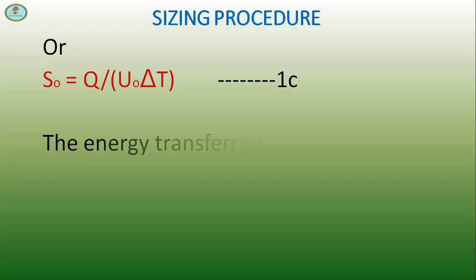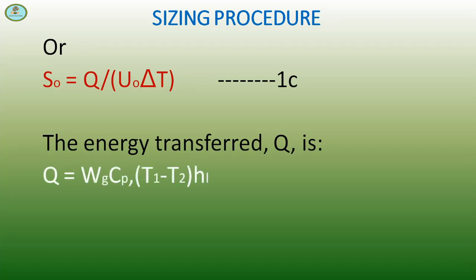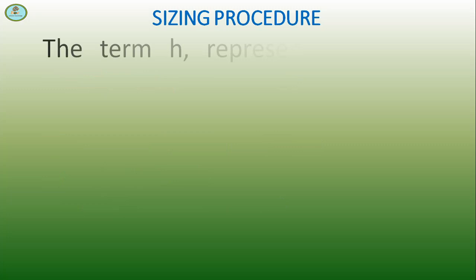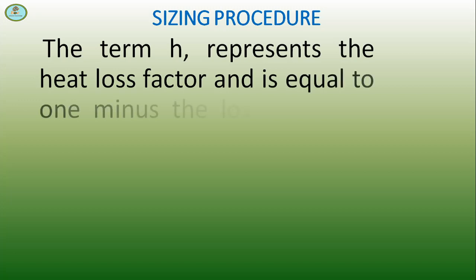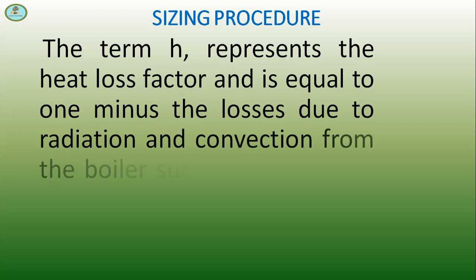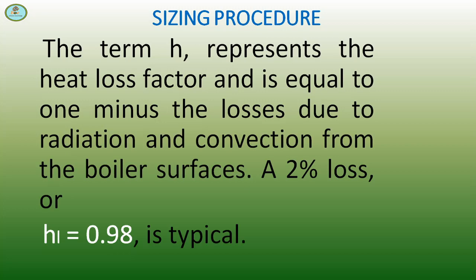The energy transferred Q is Q = Wg × Cp × (T₁ - T₂) × Hᵢ = Ws × Hs. This is equation 2. The term H represents the heat loss factor and is equal to 1 minus the losses due to radiation and convection from the boiler surface. A 2 percent loss, Hᵢ = 0.98, is typical.